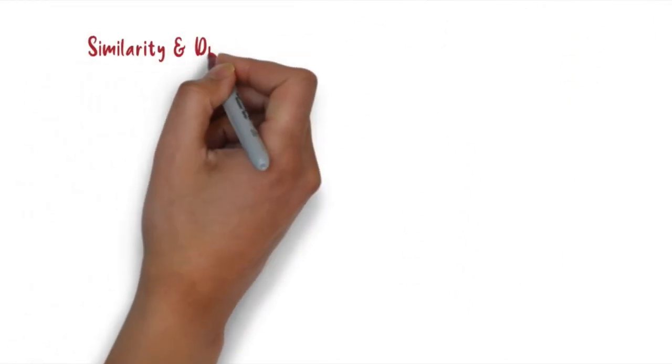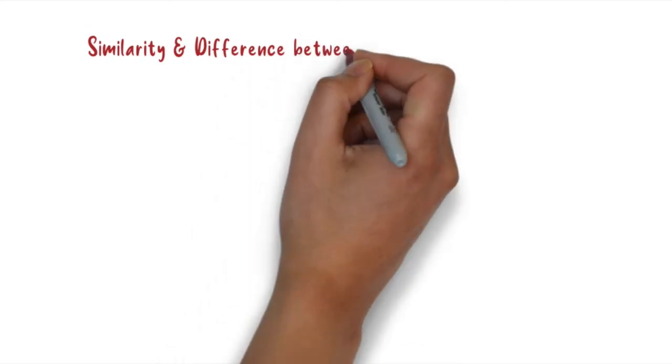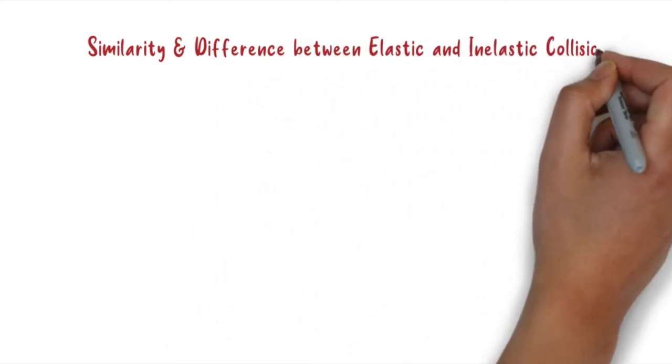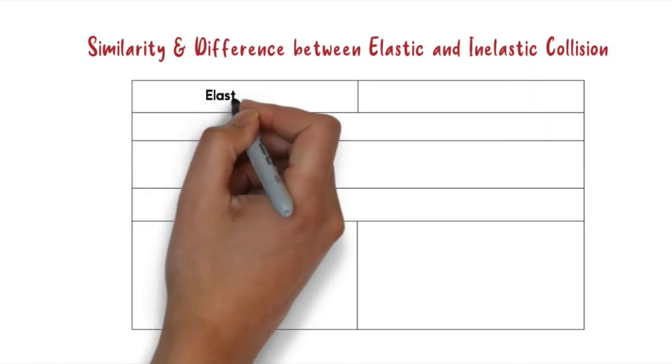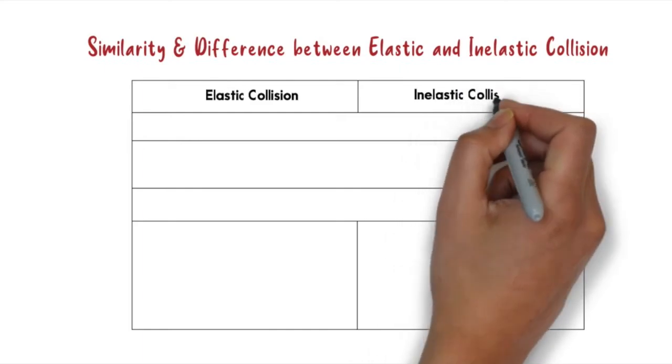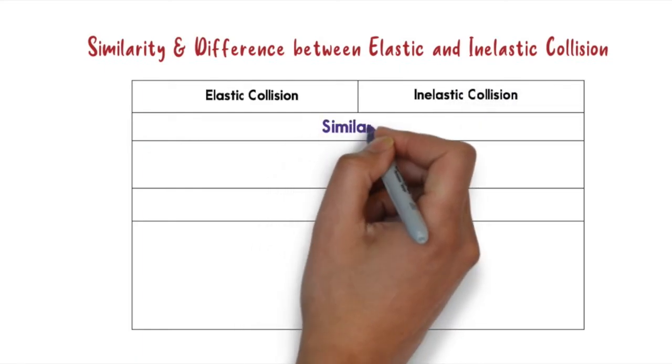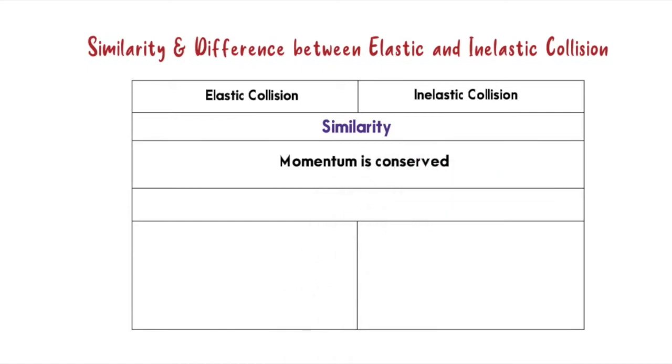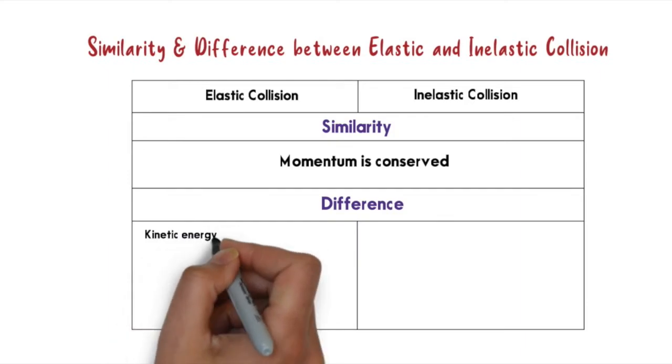Let's have a look at the similarity and differences between elastic and inelastic collision. Based on the table below, you can see that for elastic collision and inelastic collision, the similarity for both collisions is that momentum must be conserved.